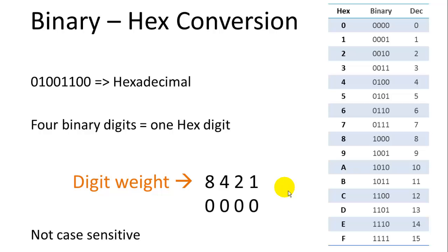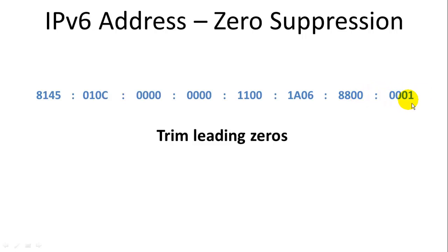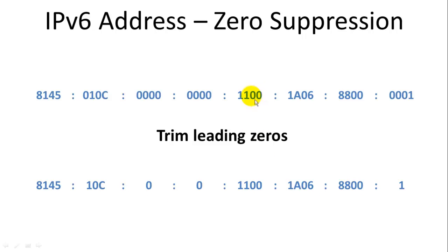IPv6 addresses are not case sensitive, so you can use uppercase or lowercase hexadecimal digits. One way to simplify IPv6 addresses is by suppressing leading zeros. For example, a leading zero can be trimmed off, and three leading zeros in a group can be trimmed off as well. However, we cannot trim trailing zeros — if we trimmed trailing zeros and just wrote 11, routers would interpret it as 0011, not 1100. So trailing zeros must always be there, but leading zeros can be removed.